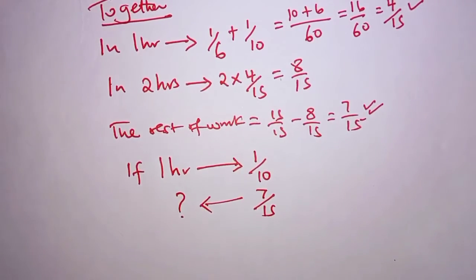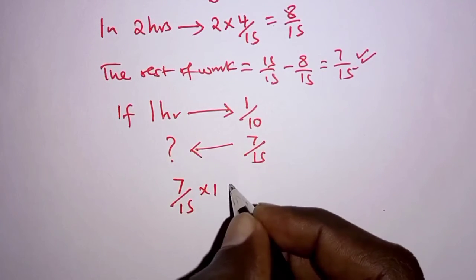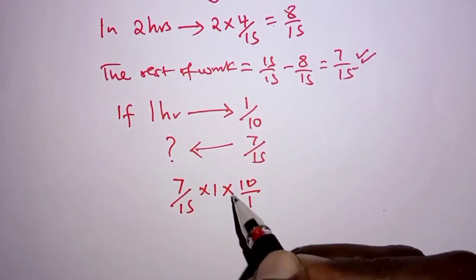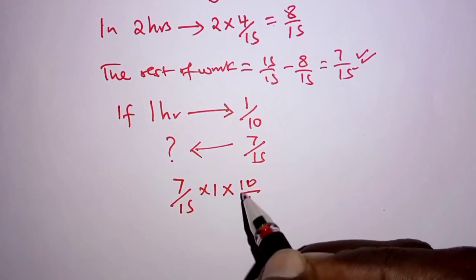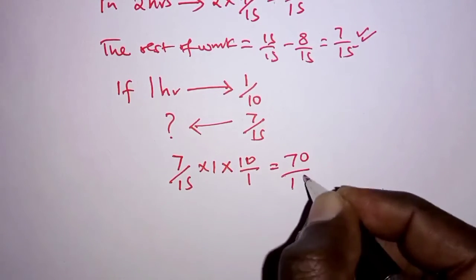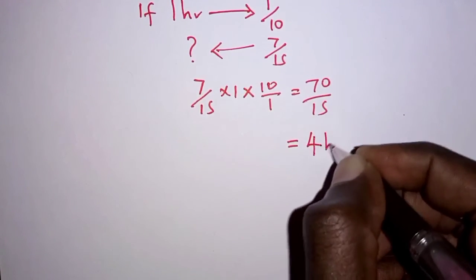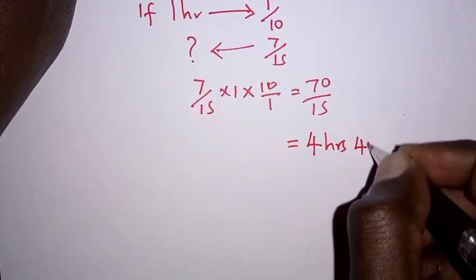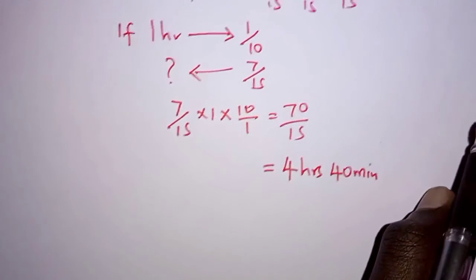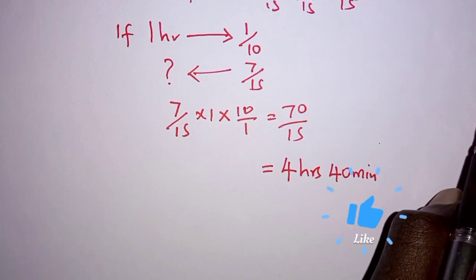If we cross multiply, we have 7/15 divided by 1/10, which changes to multiplication: 7/15 times 10/1, giving us 70/15. Simplifying 70/15 gives us 4 hours 40 minutes. That is the time Machine B would take to complete the rest of the work, which is what the question required us to find.